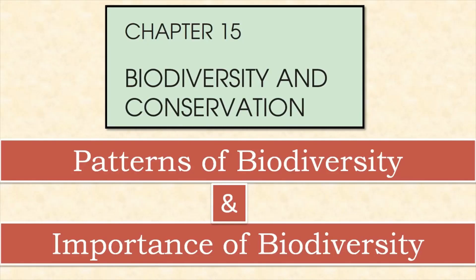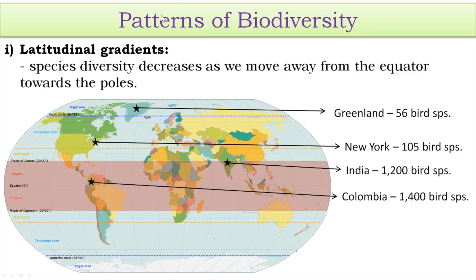Hello everyone, welcome to Class 12 Biology. In this video on Chapter 15, Biodiversity and Conservation, we are going to discuss patterns of biodiversity and the importance of biodiversity. The first topic is patterns of biodiversity, which covers the distribution of plant and animal species across the entire globe or in a given area. There are certain patterns observed regarding the distribution of life forms in a given area.